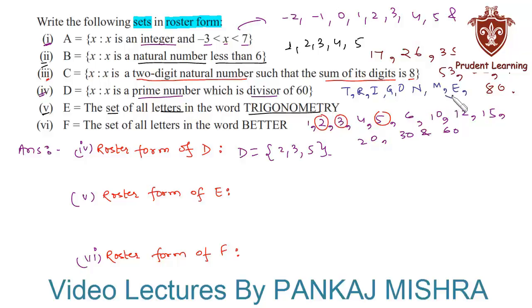So set E can be written in roster form as E = {T, R, I, G, O, N, M, E, Y}. Now let us see the last section of the given question.